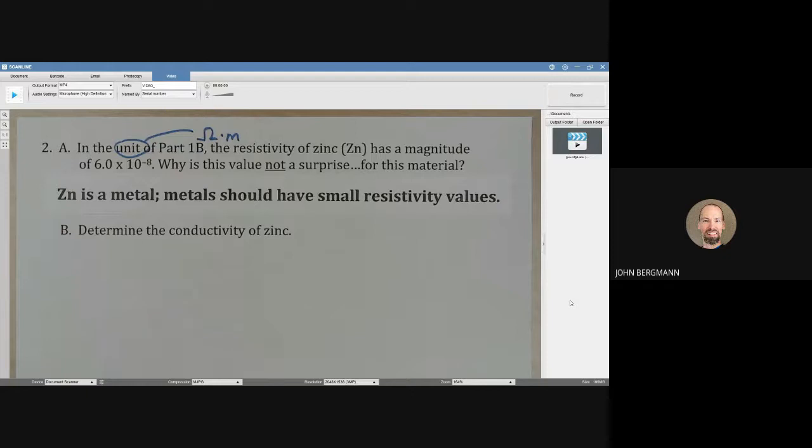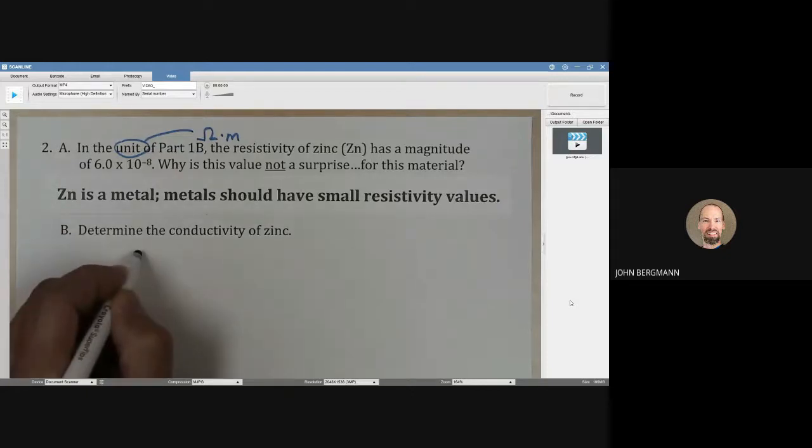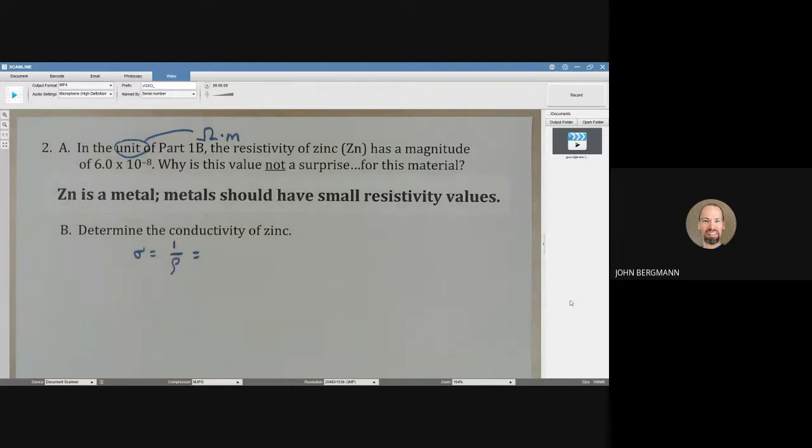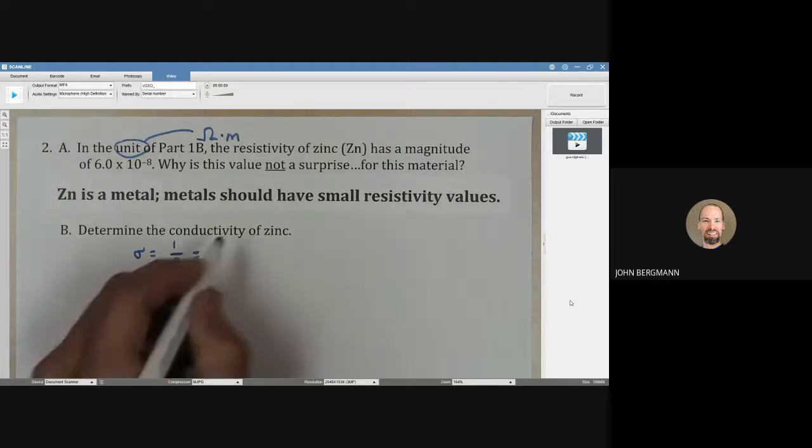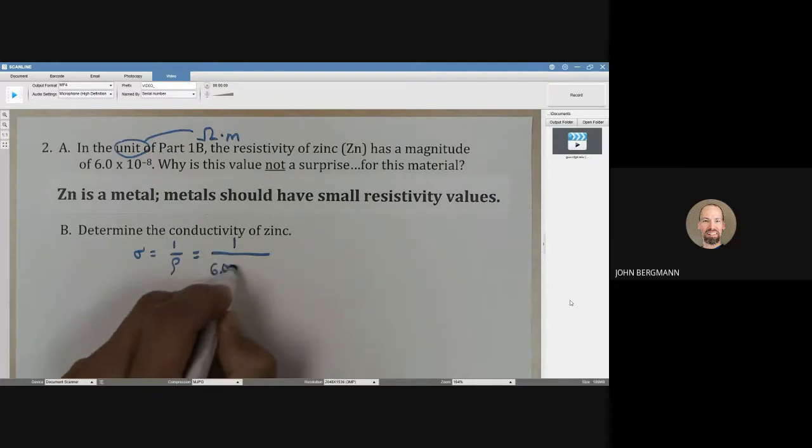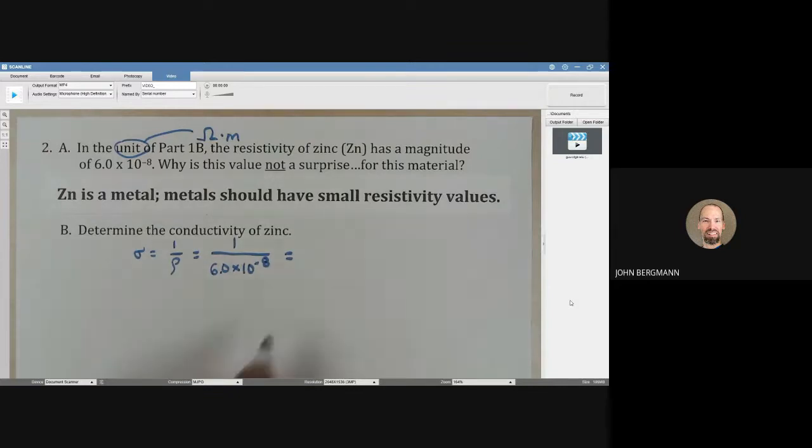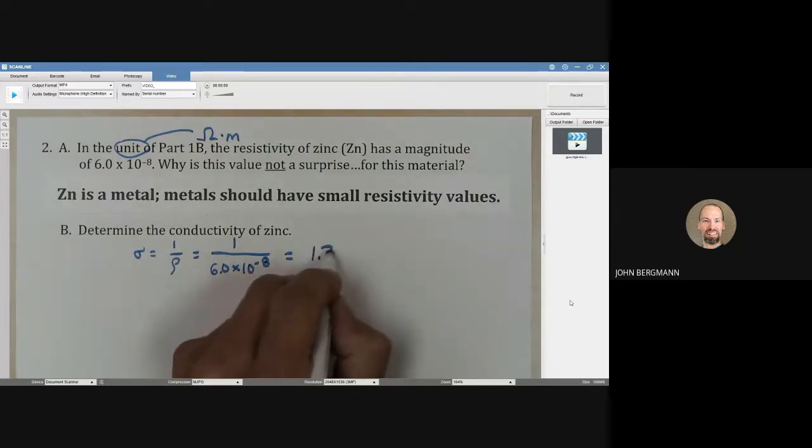The conductivity of zinc then is going to be easy to find. The conductivity is just one over the resistivity. So that's going to be one over 6.0 times 10 to the negative eighth. And that's going to give us a big value. To two significant figures.